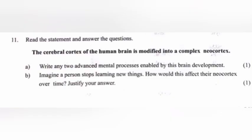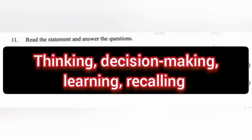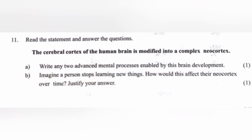Question 11: Read the statement and answer the questions. The cerebral cortex of the human brain is modified into a complex neocortex. Part A: Write any two advanced mental processes enabled by brain development. Answer: Thinking, decision making, learning, and recalling.